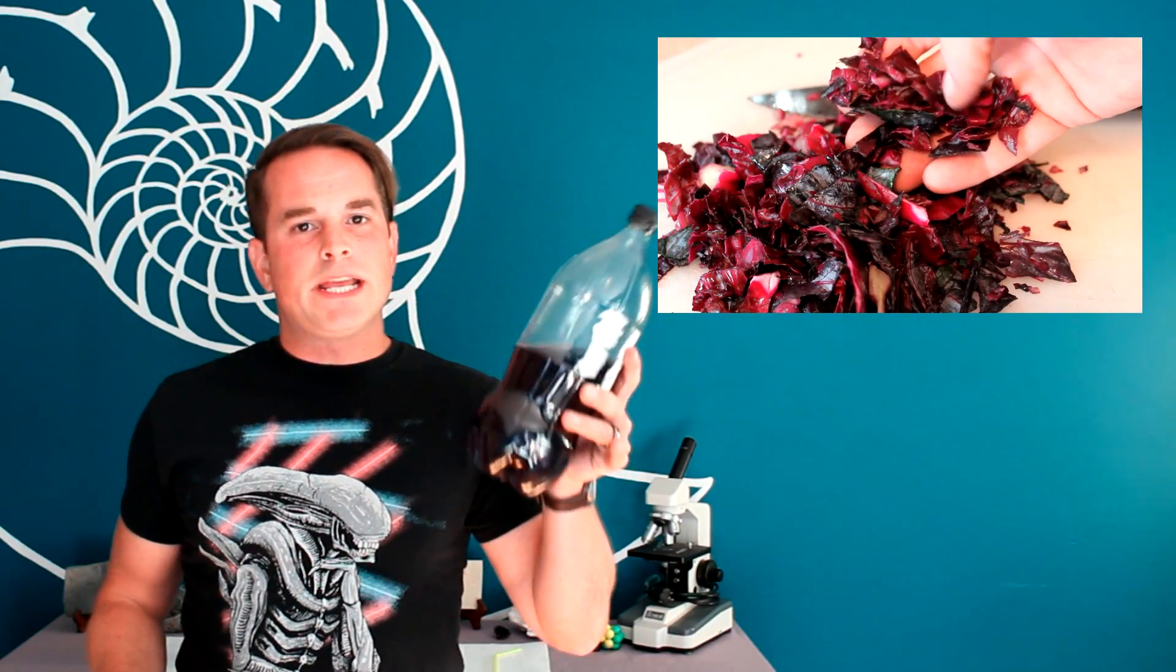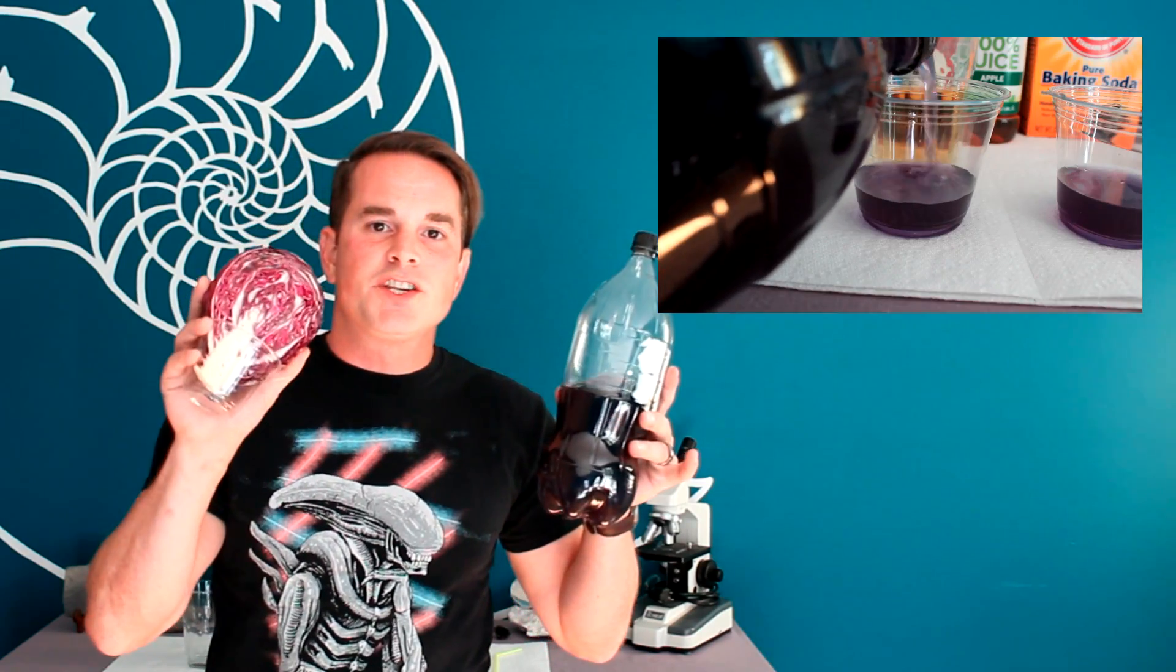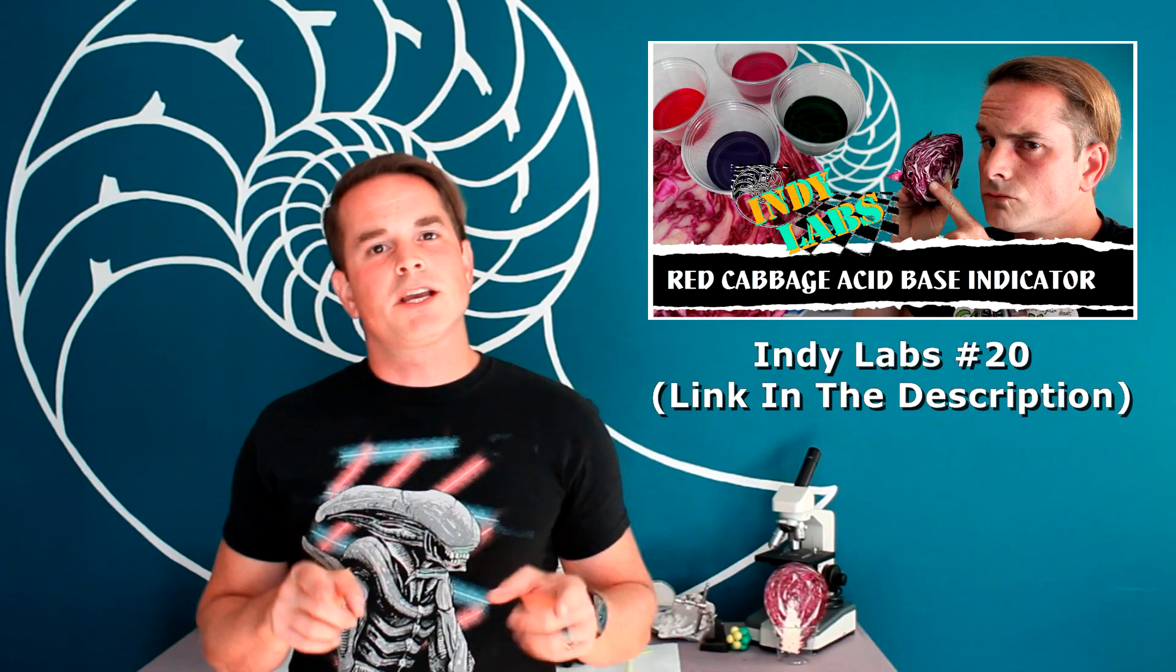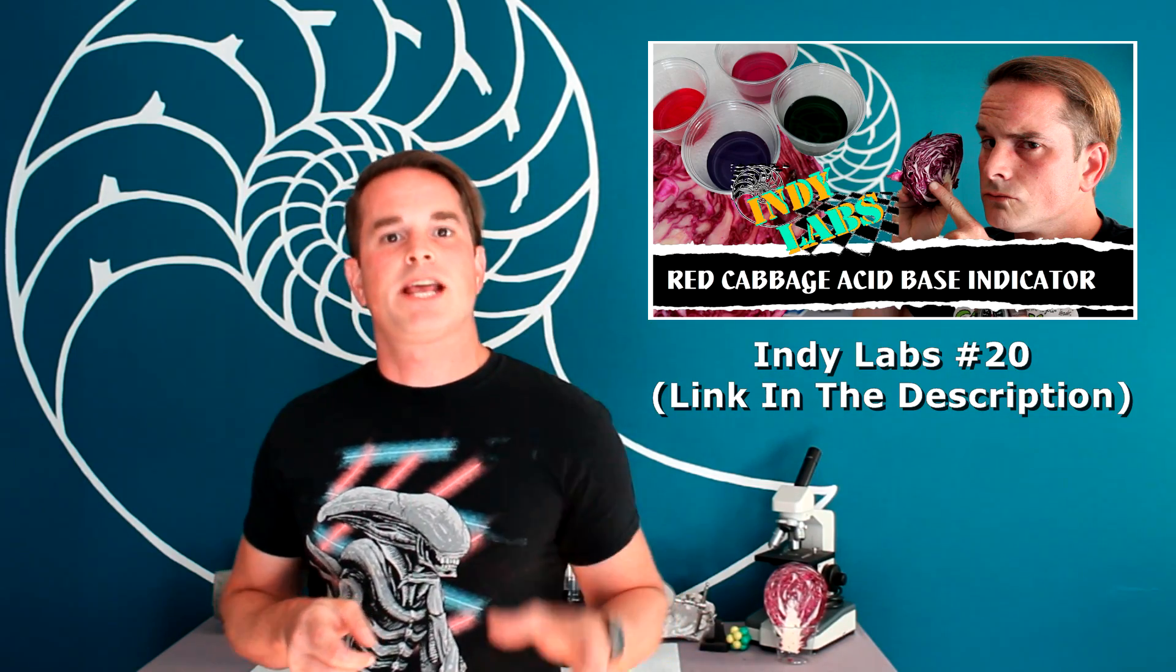In Indy Labs number 20, we showed you how to make an indicator solution just using some red cabbage. Remember that one? It's a solution that can change color to indicate to you something about the pH of the solution. Well, if you missed that one, go back and watch it because we're going to need some of that indicator solution for today's experiment. And then other than that, the only thing that you need is two glasses and a straw and the air from your lungs. Here we go. Let's show you how you are an acid breather.